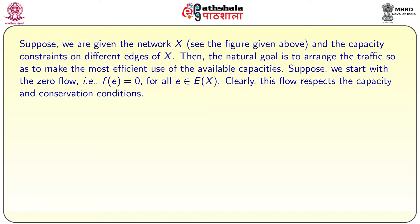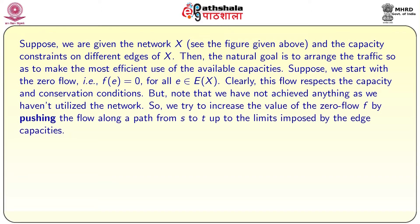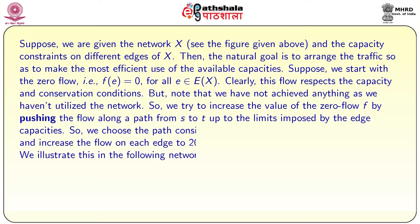Suppose we start with a zero flow — f(e) equals 0 for all edges. Clearly this flow respects the capacity and conservation conditions, so it is a feasible flow. But we have not achieved anything as we have not utilized the network at all. So we try to increase the value of the zero flow by pushing flow along a path from s to t up to the limits imposed by the edge capacities. We can choose the path consisting of edges s-u, u-v, and v-t and increase the flow on those edges to 20, leaving f(e) equal to 0 for the other two edges.